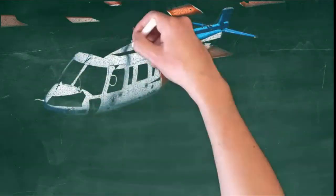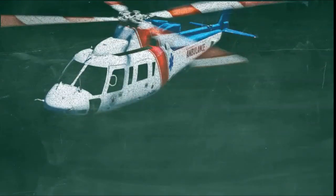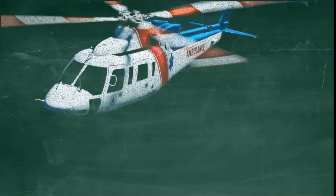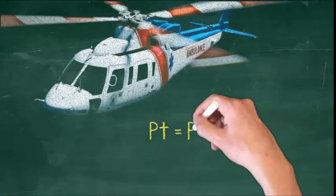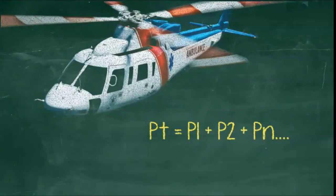Secondly, Dalton's law shows us that the partial pressure of a component gas is proportional to the percentage of the mixture that it represents. In flight physiology, because the partial pressure of CO2 and water vapor are relatively constant in the lungs regardless of altitude, the second effect compounds the first and we can see dramatic changes in the body's ability to acquire atmospheric oxygen.